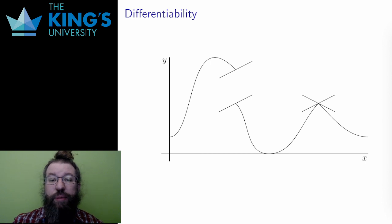What happens when the limit that defines a derivative doesn't exist? Well, then the derivative doesn't work. Not all functions are differentiable. Sometimes, the slope of the tangent line is not defined.